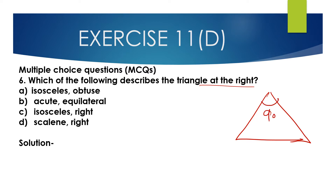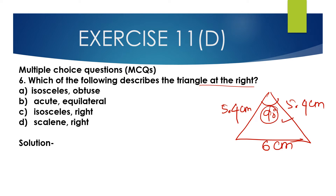This angle is 90 degrees. Two sides measure 5.4 cm and 5.4 cm. This one is 60 degrees. We know any triangle in which one of the angles is 90 degrees is a right angle triangle, and in any triangle where two sides are equal, that triangle is said to be an isosceles triangle.